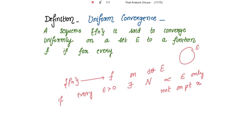This is your set E and there is a point X in E. So this positive integer N depends only on epsilon but not on this point that belongs to E, such that for all X belonging to E, mod of F_n(x) minus F(x) is strictly less than epsilon, for N greater than or equal to that positive integer N. This is the definition for uniform convergence.